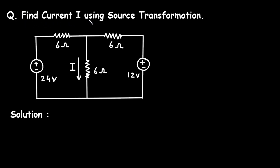Find current I using source transformation. In this circuit we have to find the value of this current I by using source transformation.